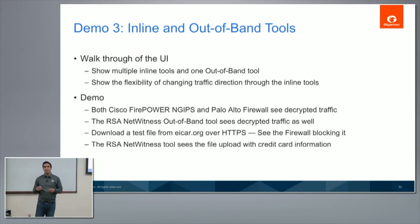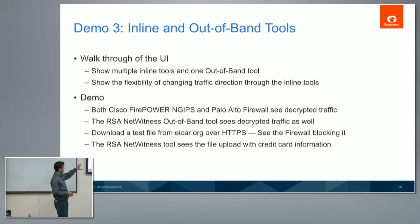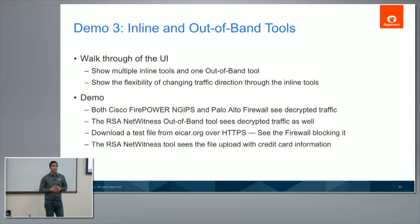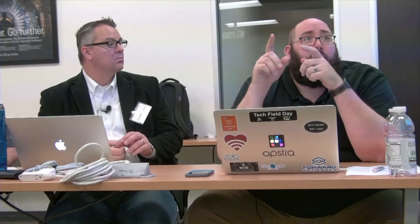All three of these tools will see decrypted traffic being fed from the HC2 visibility platform. First, I'm going to download a test file from ICAR.org — the European expert group for IT security — which hosts non-malicious test files to do a basic check on antivirus and vulnerability capabilities. I'll download it over HTTPS and see if the firewall is able to block it even though it's over an encrypted connection.